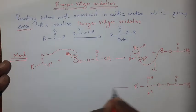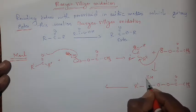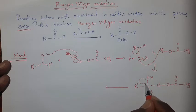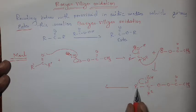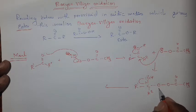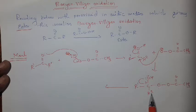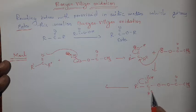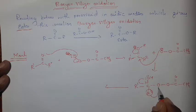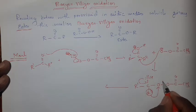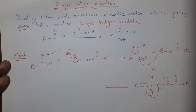In the next step, this oxygen contains a lone pair of electrons. These lone pairs are shifted, then the carbon-oxygen bond becomes a double bond. At that time, one of the two alkyl groups is shifted to the neighboring oxygen. Whichever of R1 and R2 is more electronegative, that group is shifted to the oxygen.